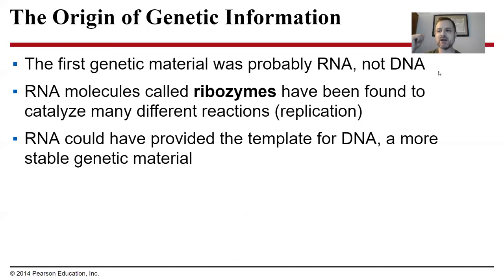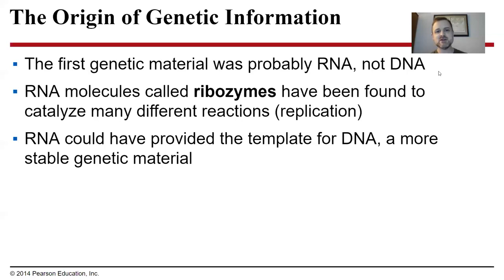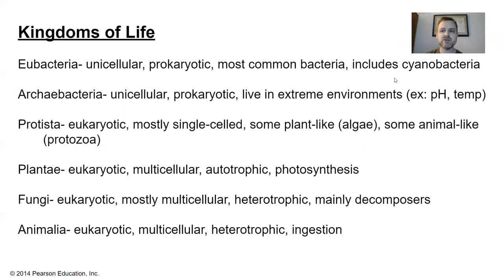The last step: to have life that reproduces, you need a way to store information — you need a program for life. Life first likely used an RNA code, not a DNA code. RNA is simpler: it's single-stranded and simpler to copy. DNA would be better because it's double-stranded and more stable. Also, small RNA molecules called ribozymes can actually act as enzymes. So RNA probably came first, and DNA came later. None of these steps create a cell from non-living stuff, but they're all interesting in showing how you can create the stuff of life without pre-existing life.